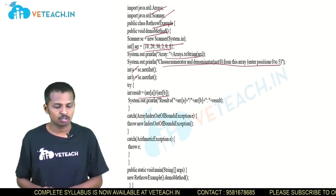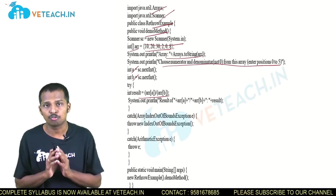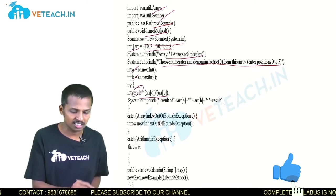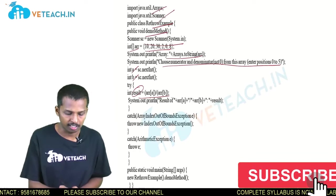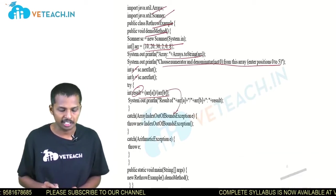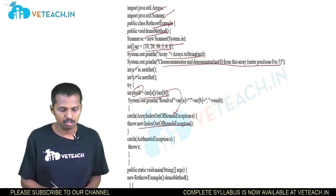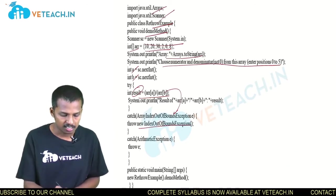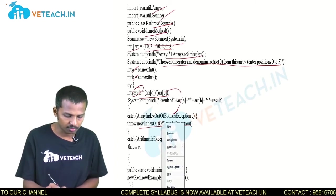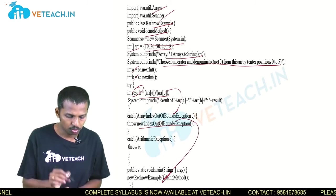In the try-block, we access array[a] divided by array[b]. If a and b are within 0 to 5, we get the result successfully. If anything is out of range, control transfers to the ArrayIndexOutOfBoundsException catch-block. From there, we are re-throwing this exception as an IndexOutOfBoundsException, re-throwing it from the catch-block to the rethrow demo method.